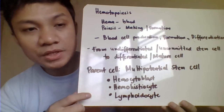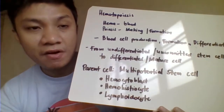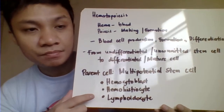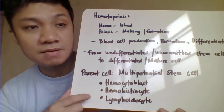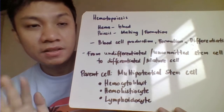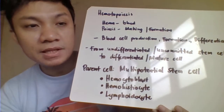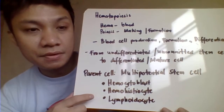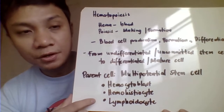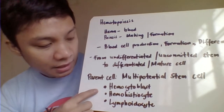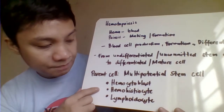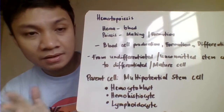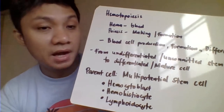The parent cell from which all blood cells arise and which can be found in your bone marrow is called your multi-potential stem cell. It is multi-potential because it has the capacity to differentiate into different cell types. Other names for your multi-potential stem cells include pluripotent stem cells, hemocytoblasts, hemohistroblast, hemohistrocyte, and lymphoidocytes — these are all alternative names used by different authors.